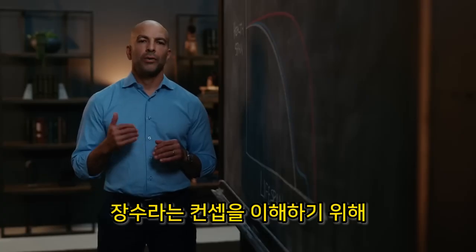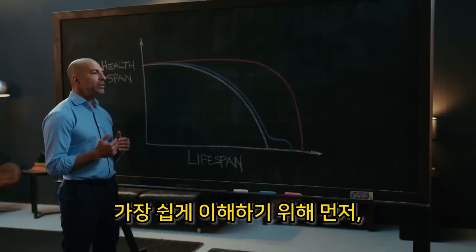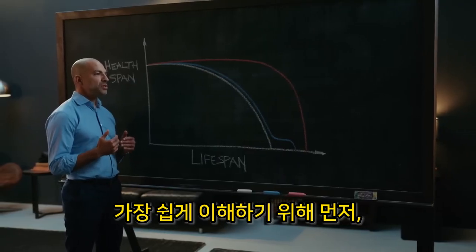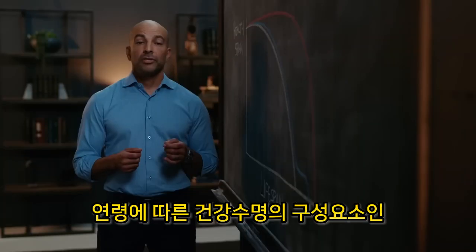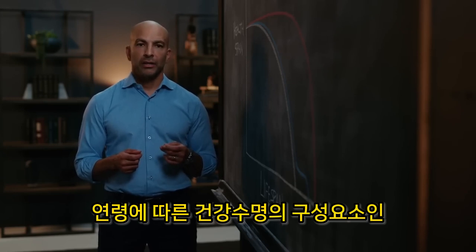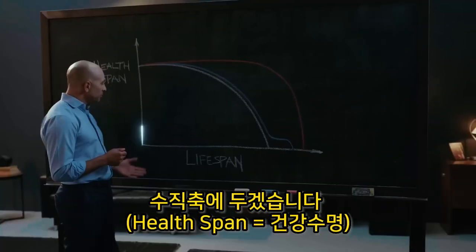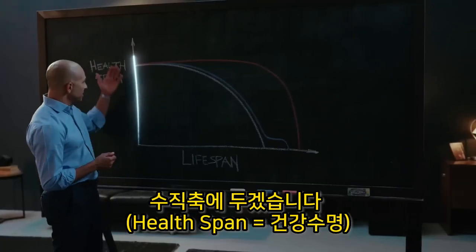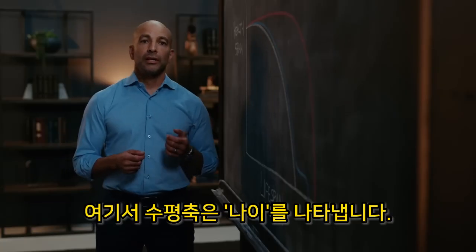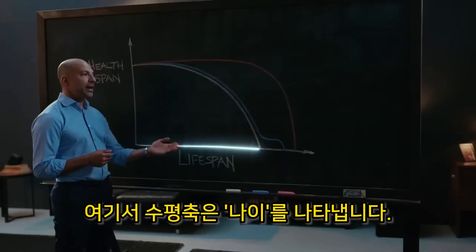I want to talk about a graphical way that we can represent longevity. The most accessible way to do this is to consider the two age-dependent drivers of healthspan — cognition and physical performance — on the vertical axis, while considering lifespan on the horizontal axis.